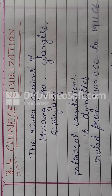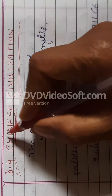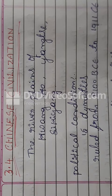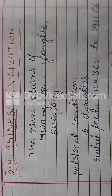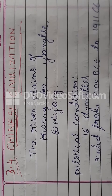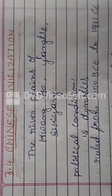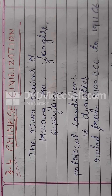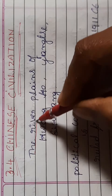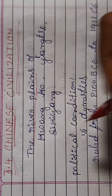This civilization is also a very important civilization. All civilizations were developed at the bank of rivers. The Mesopotamian civilization was developed at the banks of the Euphrates and Tigris, and the Egyptian civilization was developed at the bank of the River Nile. Similarly, the Chinese civilizations were developed at the bank of three rivers.